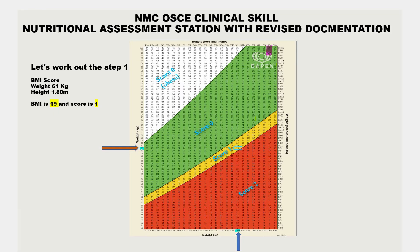She has been vomiting frequently and has not eaten for more than five days. So let's apply Steps 1, 2, and 3 to this scenario. Step 1 is the body mass index. Her current weight is 61 kg and her height is 1.80 m. Using the BMI chart on screen, the BMI works out to 19. On the document we need to put the score, not the BMI itself — the chart shows red is 2, yellow is 1, green is 0, so a BMI of 19 scores 1.